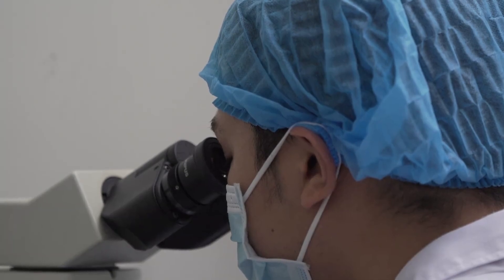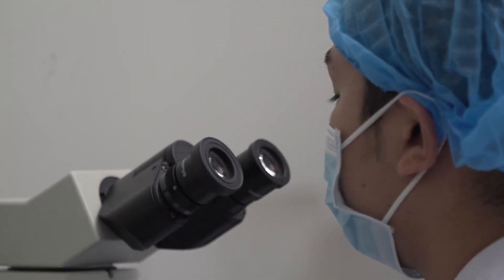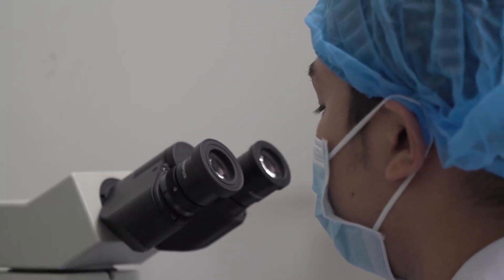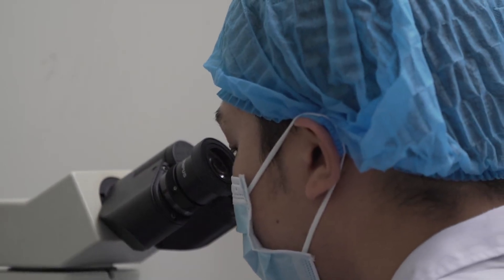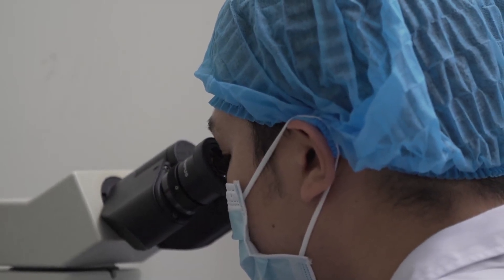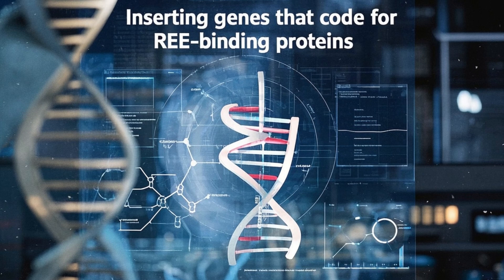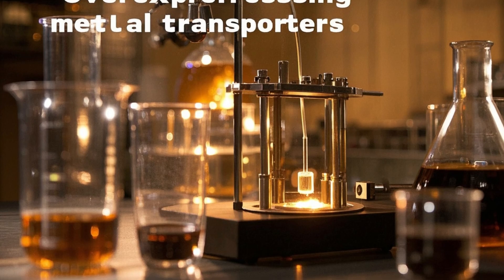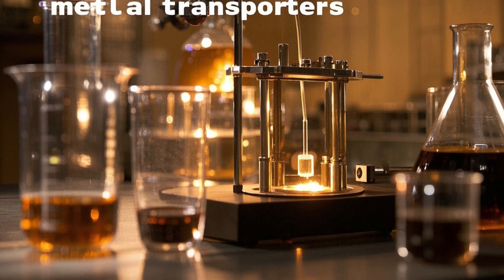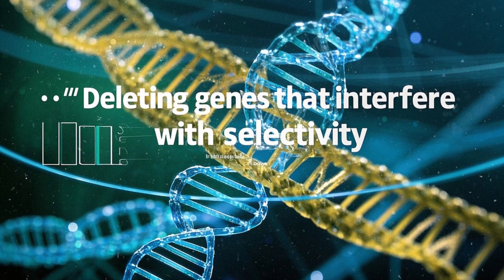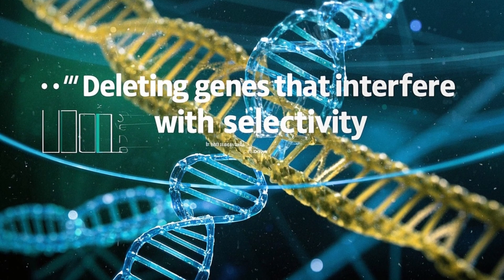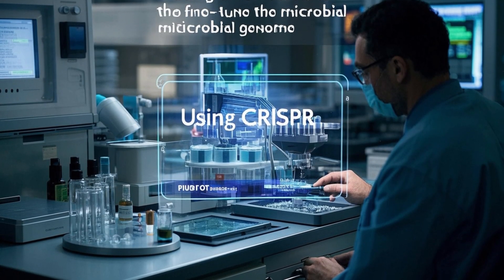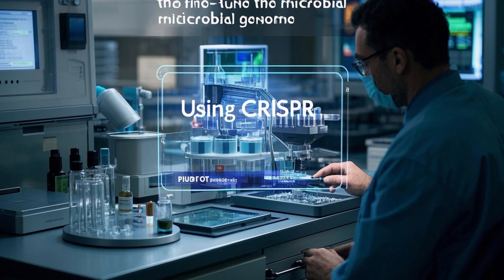In recent years, scientists have begun engineering microbial super strains capable of high-yield rare earth elements recovery. This involves inserting genes that code for rare earth elements binding proteins, over-expressing metal transporters, deleting genes that interfere with selectivity, and using CRISPR tools to fine-tune the microbial genome.